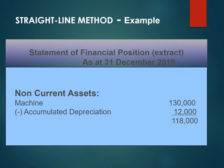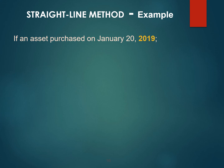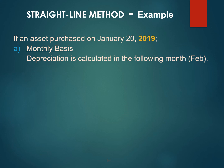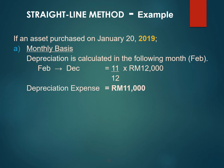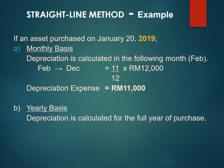This is an example of how we report the accumulated depreciation in the financial position statement. Now let us compare the depreciation expense amounts using monthly basis versus yearly basis, using the previous example. With monthly basis, if the asset was purchased on January 20, 2019, we only calculate depreciation from February to December — that is only 11 months — giving a depreciation expense of RM11,000. Whereas in yearly basis, depreciation is calculated for the full purchase year, giving RM12,000. The difference of RM1,000 arises from the basis used in calculating the depreciation.